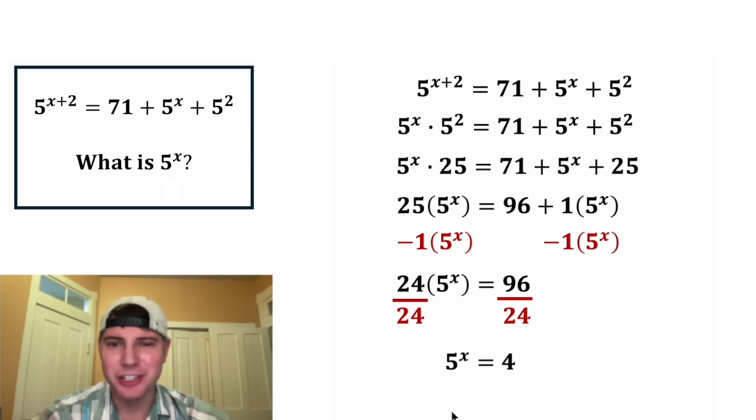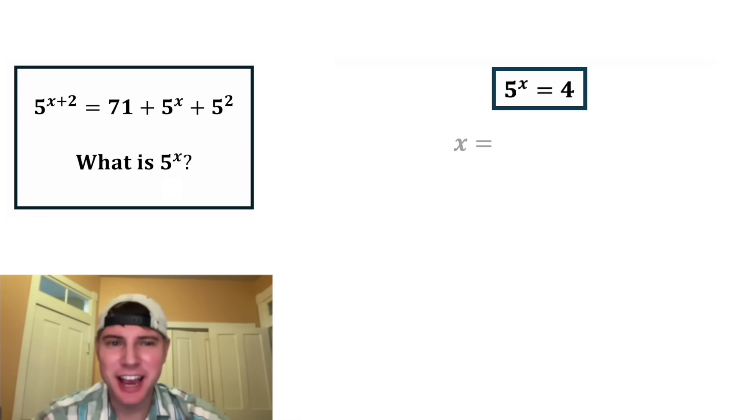And this is the answer to our question. 5 to the power of x is equal to 4. Let's put a box around it. And if you're curious about x, the exact value of x is log base 5 of 4, and that's approximately equal to 0.86135. How exciting.